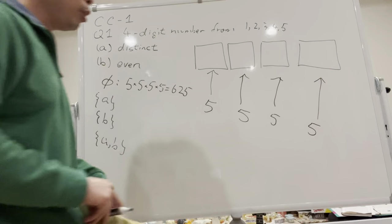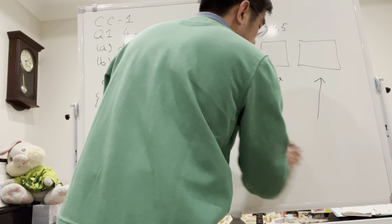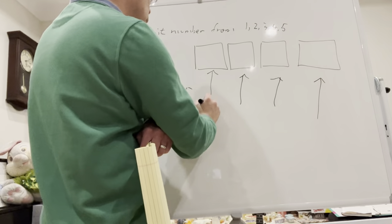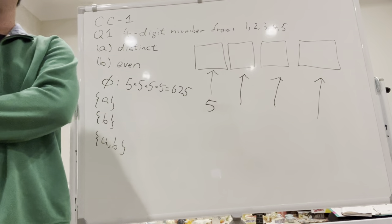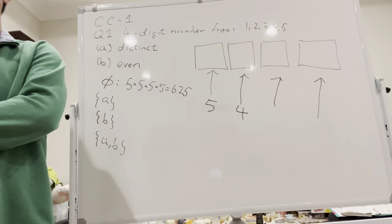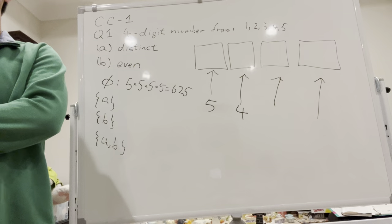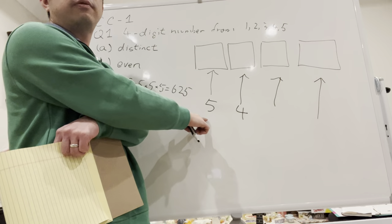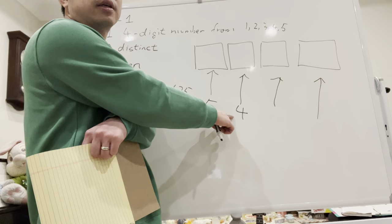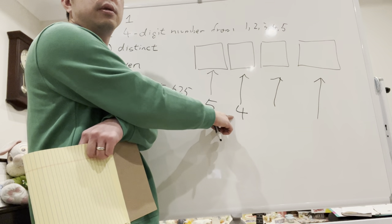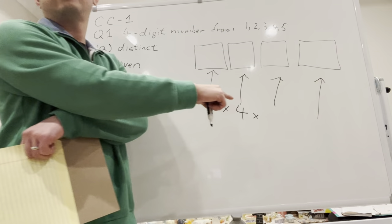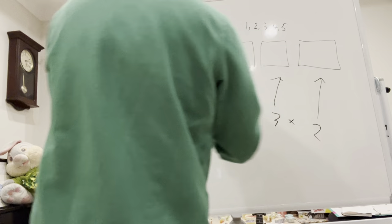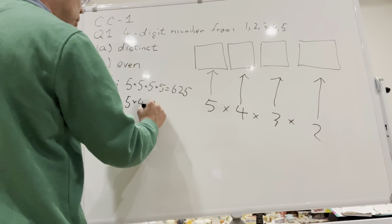For the second part, we require the four digits to be distinct. There are five options for the first choice. No matter which digit we pick for the thousands place — whether 1, 2, 3, 4, or 5 — there are always four remaining options for the hundreds digit. Similarly, three for the tens digit, and two for the units digit. So the answer for condition A is 5 × 4 × 3 × 2 = 120.